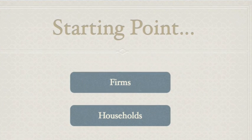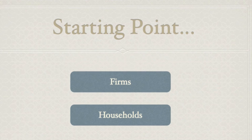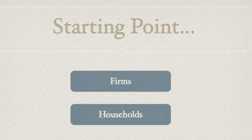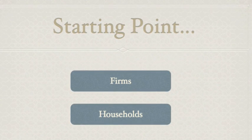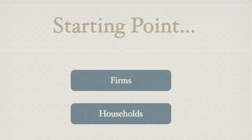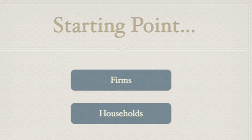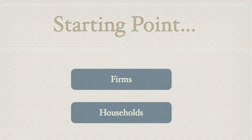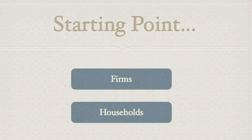Starting Point. We start by observing that two economic agents exist in an economy. First, households. They own factors of production such as land, labour, capital or enterprise, and demand goods and services.